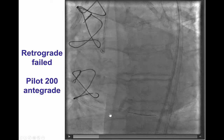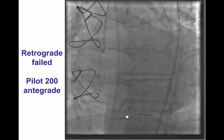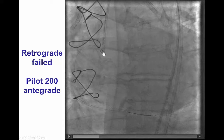Going retrograde can be challenging and can be facilitated by using the hairpin wire technique, pre-shaped microcatheters like the Supercross, or using the Venture catheter. To our surprise, we tried an antegrade Pilot 200 and that very easily crossed all the way to the right posterior descending artery, as confirmed by the retrograde guide wire that was already there. That was not our intent, and that is why we had used a GER guide, which is not the commonly used guide in the antegrade fashion.